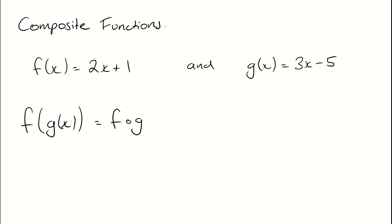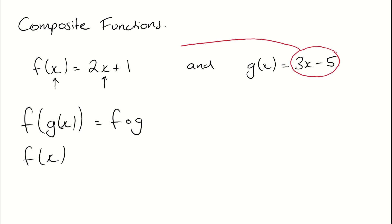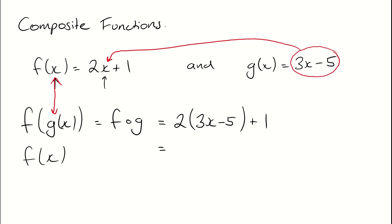Instead of f of x, we've got f of g of x. So everywhere I see an x on the right-hand side, I need to put what g of x is straight in there. I take this 3x minus 5 and pop it in for x, because instead of an x, I have g of x written there. So I end up with 2 lots of my 3x minus 5 plus 1, which gives 6x minus 10 plus 1.